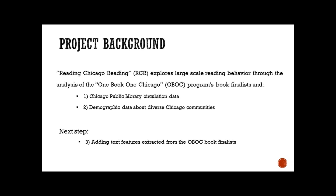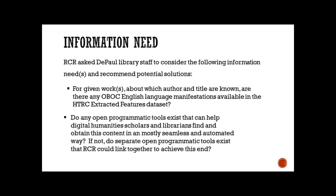The next step for the project is adding text features to the analysis. It is at this point that Reading Chicago Reading identified some very concrete information needs that pertain to extracting and adding text features to the analysis. One of those needs can be formulated as: for given works that we know author and title for, are there any English language manifestations of one book one Chicago finalists available in the HathiTrust extracted features data set? The HathiTrust extracted features data set allows researchers to access in a non-consumptive way the volume and page level features from more than 13.7 million volumes available in the HathiTrust digital library.